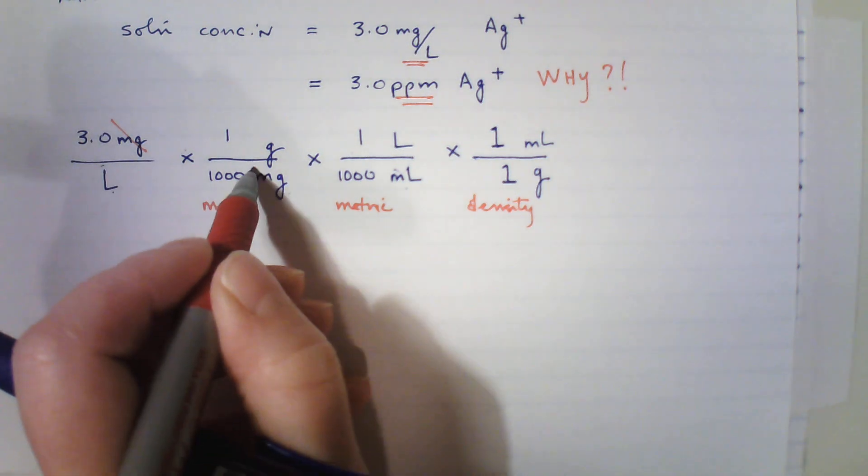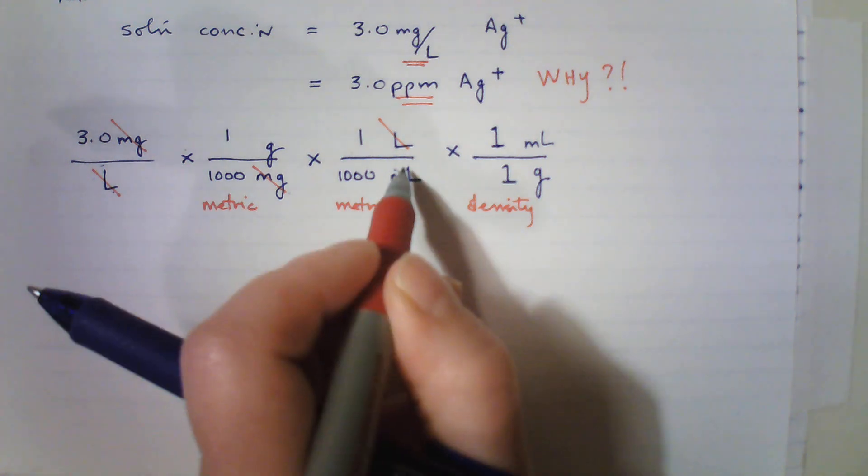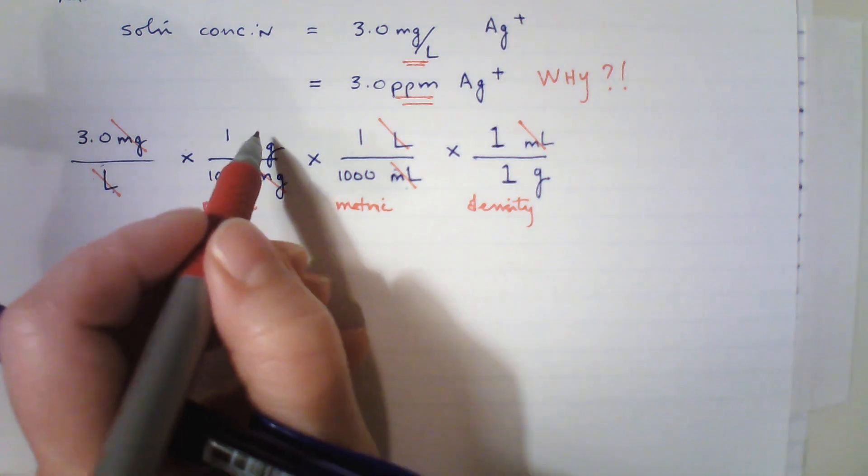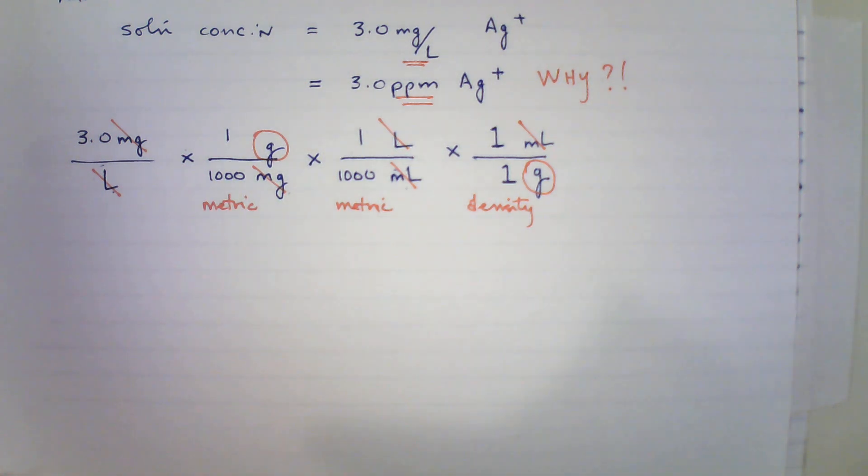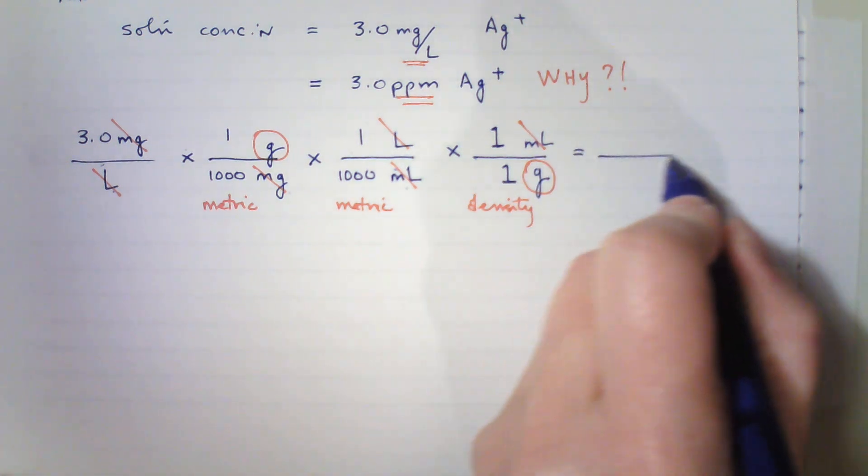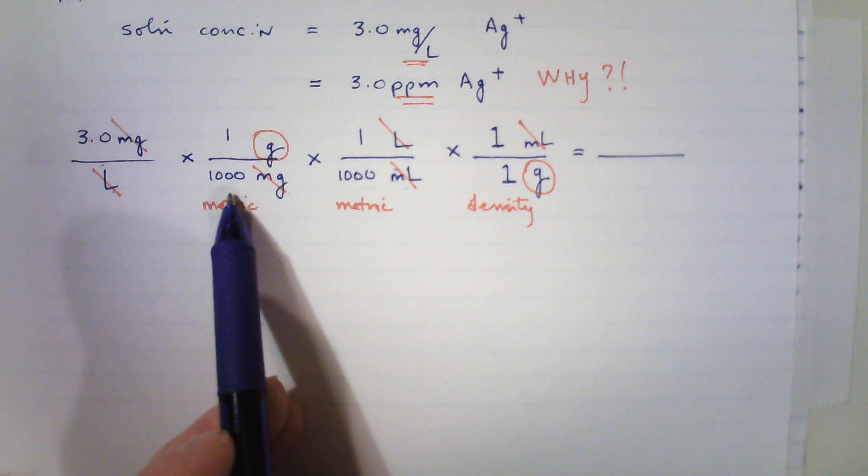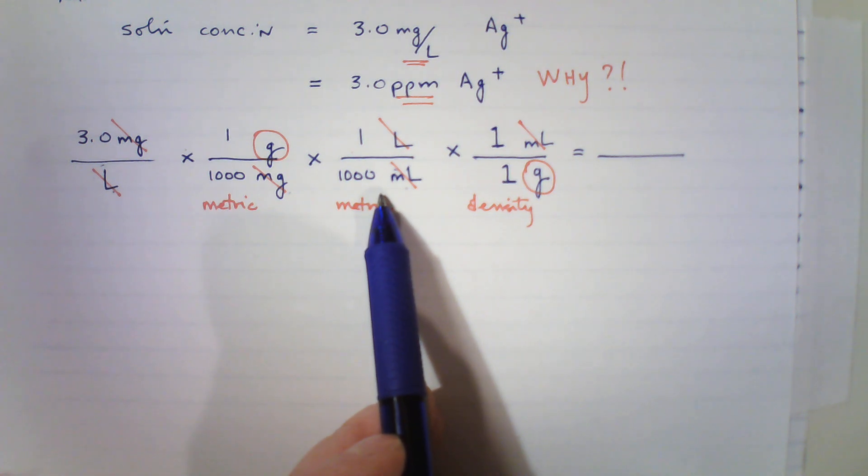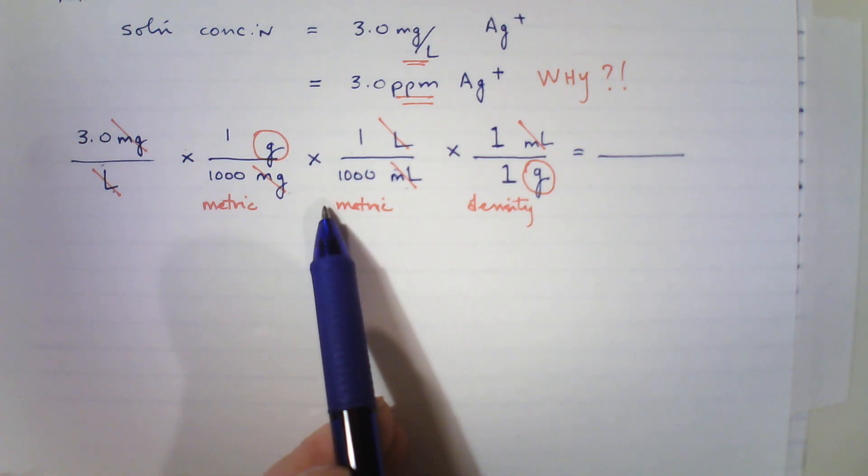Let's look at what we've done. Those units will cancel with these units. Liters cancel with liters. And milliliters cancel with milliliters. And don't cancel the grams yet, just hold on. I want to demonstrate something. So see how I'm just left with grams on the top and grams on the bottom? And what is my value? On the top, it will be 3, and on the bottom, 10 to the 3 times 1 times 10 to the 3, that's 1000, times 1 times 10 to the 3, another 1000, that's 1 times 10 to the 6. And this will be 3.0 divided by 10 to the 6.